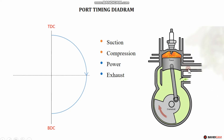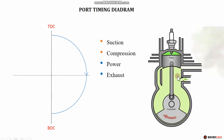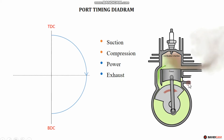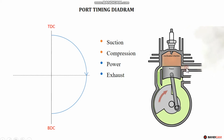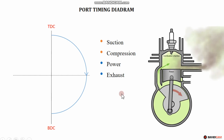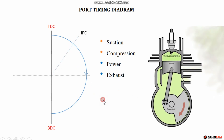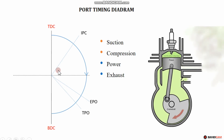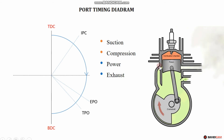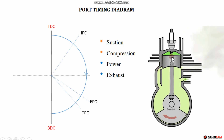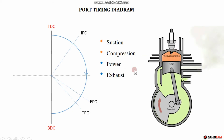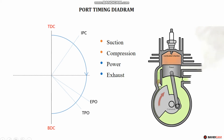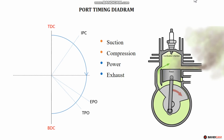Next, the exhaust port will open. In the animation, the diagram shows that first the exhaust port opens, then the inlet port opens. So first the exhaust port is open, then we open the transfer port as well. The exhaust port is now open. Next, the exhaust port is closed, and the piston will go to the bottom.